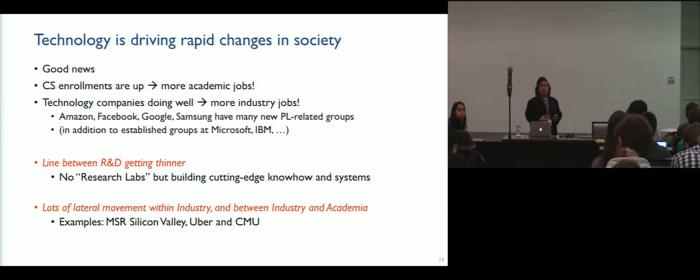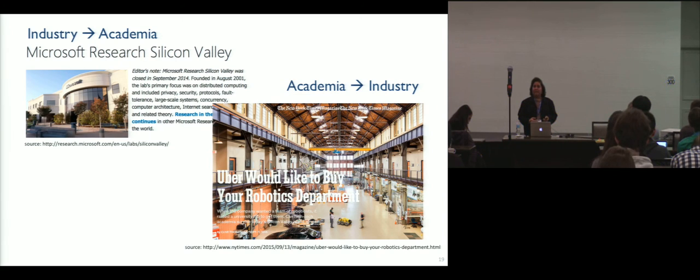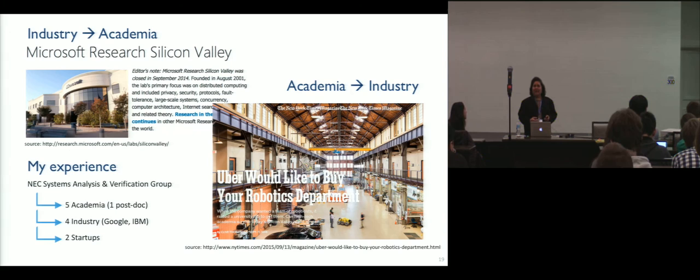And there's also a lot of lateral movement within the industry and between industry and academia. So I'm sure you all saw with some sense of sadness the closing of Microsoft Research in Silicon Valley. There's movements in the other direction, too. And entire groups from academia have been picked up to go work in the industry. And maybe Uber will want to buy your robotics department next. My own experience has been in my group at NEC Labs at various times. Of the nine or ten people that we had, five of us actually ended up in academia, including one postdoc person currently. Four of us went to different industry organizations and two went to startups. So as you can see, not just at an individual level, but even at the group level, because of the shifts in technology, because of the shifts in priority, I believe there's a lot more lateral movement today than there used to be before.